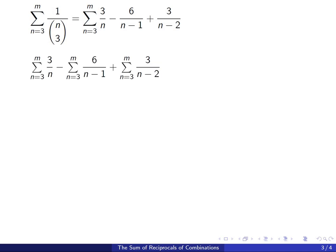So let's split that into three different sums. We get sum from 3 to m of 3 over n minus sum from 3 to m of 6 over n minus 1 plus sum from 3 to m of 3 over n minus 2.